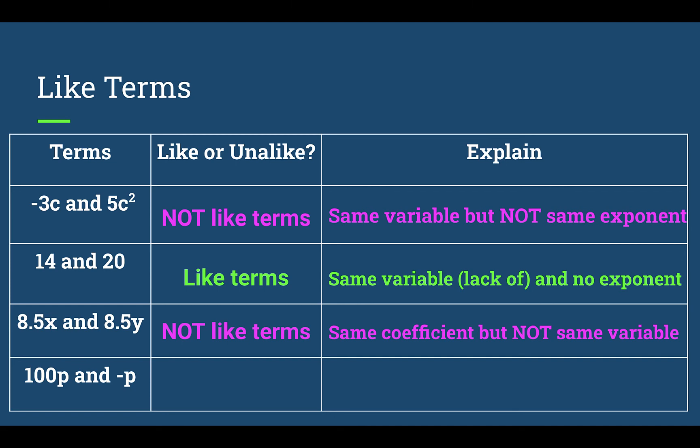And then last one, we have 100p and negative p. These are like terms. They have the same variable and the same exponent. Okay. That negative sign is just a negative 1. So the coefficients are 100 and negative 1. But the variable in the term p is the same in both.